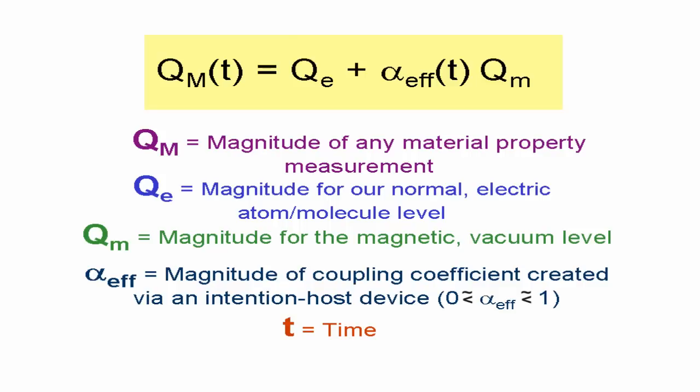Q sub m is the property value for the physical vacuum state. Alpha effective is the coupling coefficient, which depends upon the length of time that the intention host device has been operating in the space.